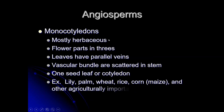Monocotyledons are mostly herbaceous but can be woody — 'mostly' always implies there's an exception. Something interesting is that bamboo is a monocot and yet it's got a rather woody stem. The distinguishing characteristics are: flower parts in threes, leaves have parallel veins, vascular bundles scattered in the stem, and arranged in a circular shape in the root. That last one you have to add in — it's only a statement of fact for the stem, not a distinguishing characteristic.